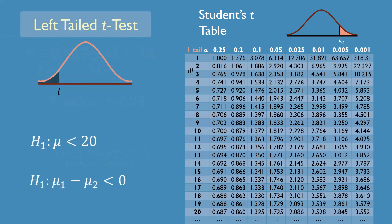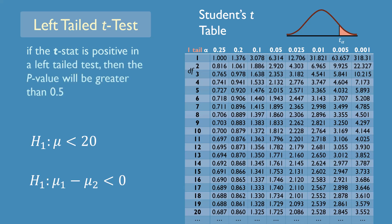For a left-tailed test, the t-statistic is typically negative. Note that if the t-stat is positive in a left-tailed test, the p-value will be greater than 0.5, and the result cannot be significant.